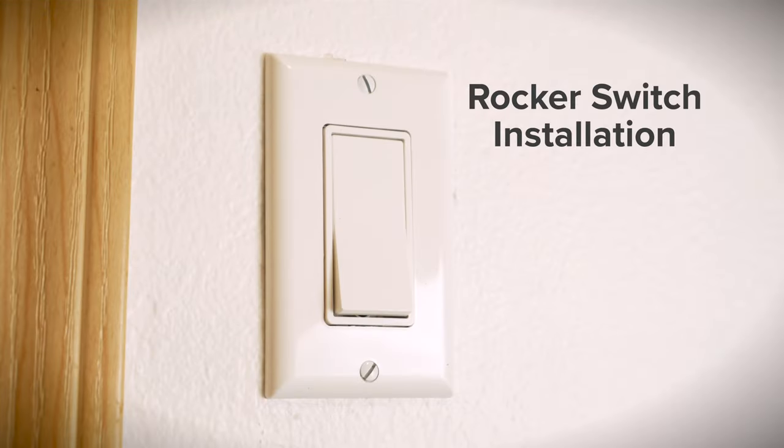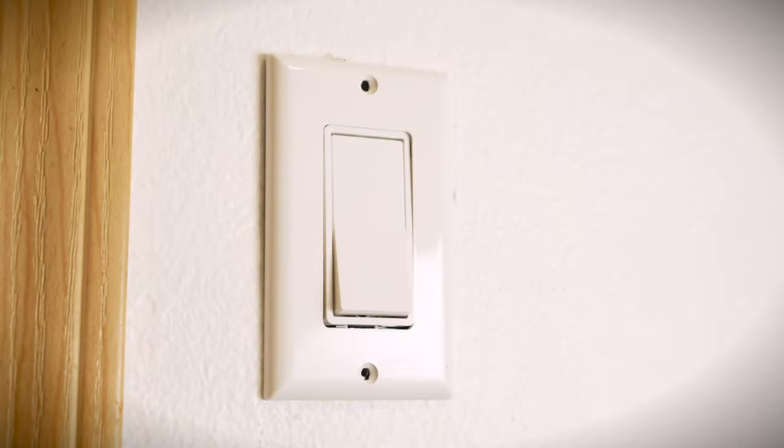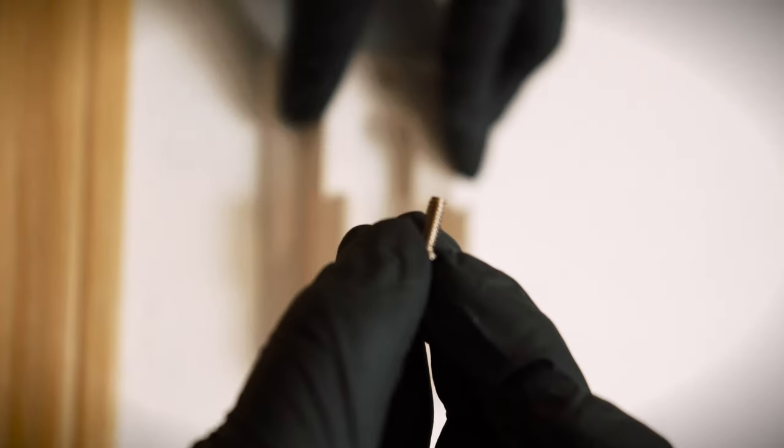For installation over a rocker switch, remove the two screws holding the cover plate. Align the remote control holder over the holes, then insert and tighten the included replacement cover screws.